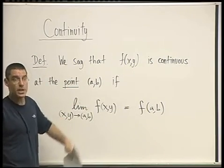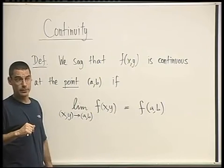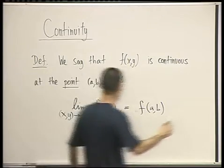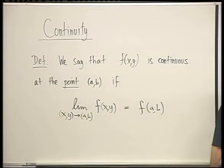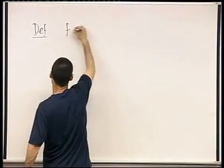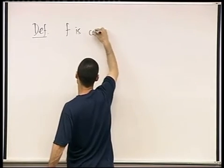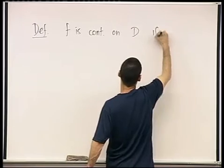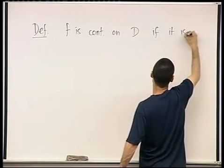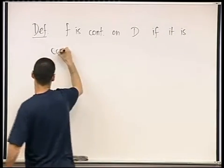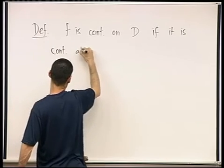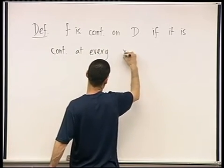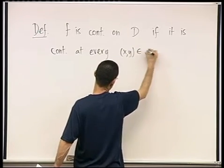When it's continuous at every point in that domain. Okay? So it's still a point-wise definition, just extended. So let's write that. Definition. F is continuous on D if it is continuous at every point (x,y) in D.